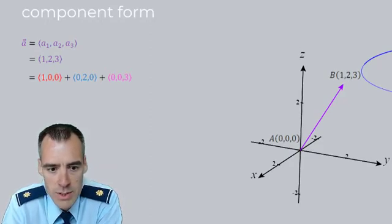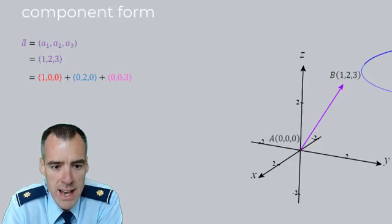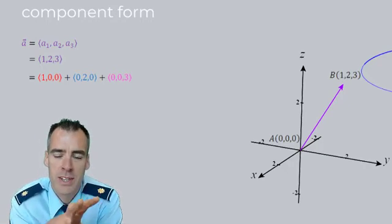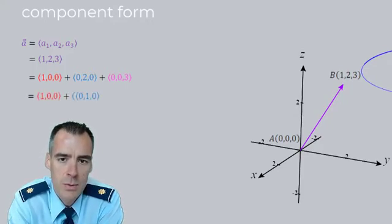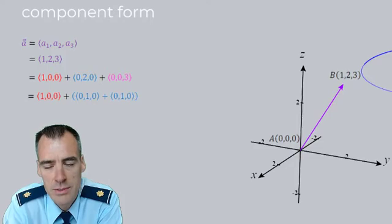Now let's break this down one more time. We could say that (0, 2, 0) vector, we could decompose that into two vectors. We could call it (0, 1, 0) plus (0, 1, 0), right?